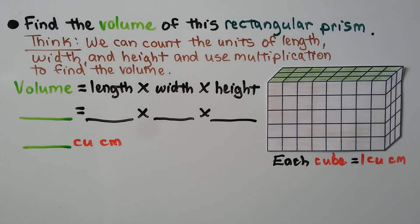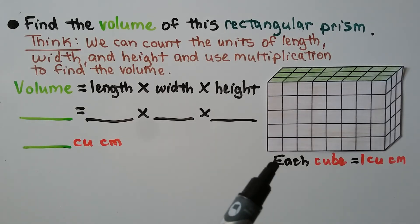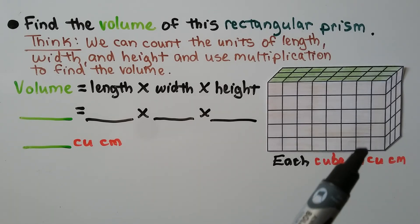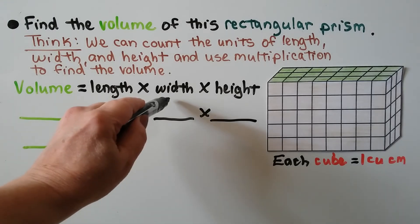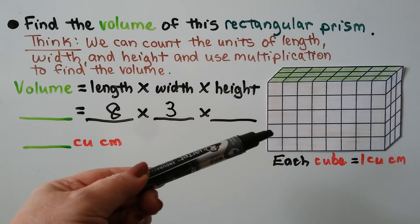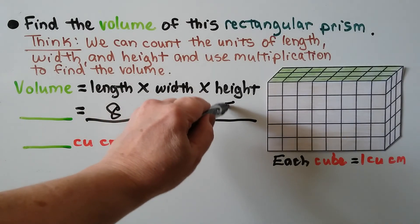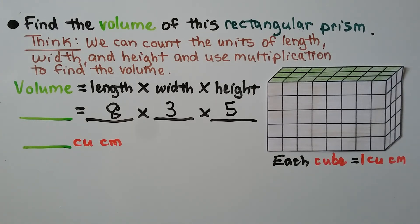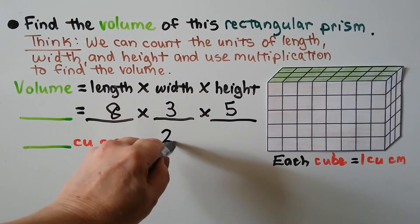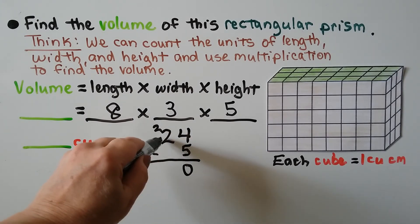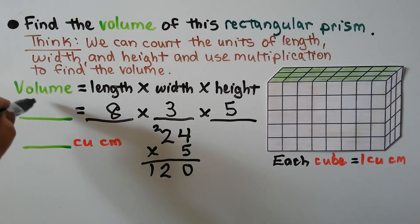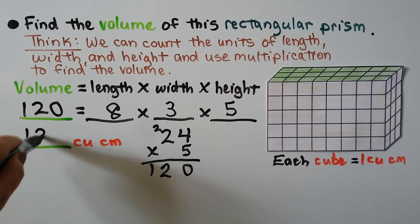Find the volume of this rectangular prism. Each cube is 1 cubic centimeter. We count the length: 8 centimeters. The width is 3 centimeters. The height is 5 centimeters. We multiply 8 times 3 times 5: 8 times 3 is 24, and 24 times 5 — 5 times 4 is 20, 5 times 2 is 10, carry the 1 — gives 120. The volume is 120 cubic centimeters.